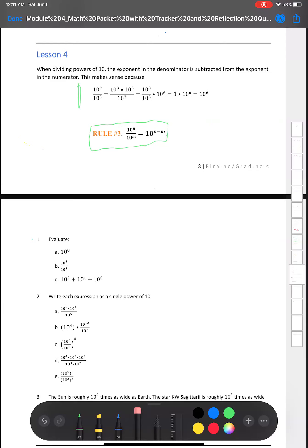So go ahead and let's read this. It says when dividing powers of 10, the exponent in the denominator is subtracted from the exponent in the numerator. This makes sense because...